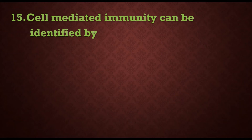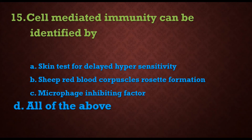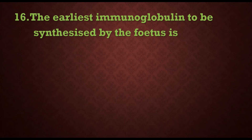Fifteenth question: cell-mediated immunity can be identified by — options are: a) skin test for delayed hypersensitivity, b) sheep red blood corpuscles rosette formation, c) macrophage inhibiting factor, d) all of the above. The answer is d) all of the above. By all of these tests we can identify cell-mediated immunity. Sixteenth question asks about the earliest immunoglobulin to be synthesized by the fetus.